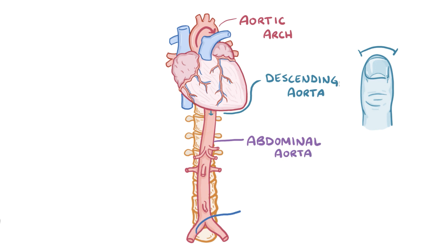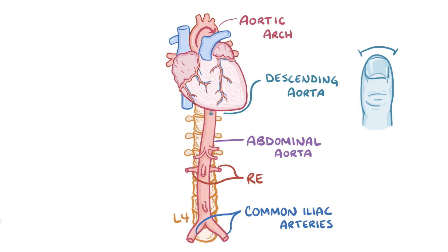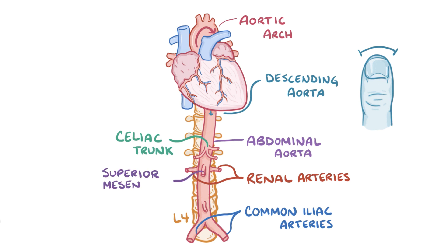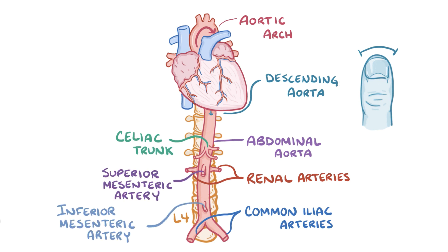The abdominal aorta then forks into the common iliac arteries near the 4th lumbar vertebra, or L4. Along the way, it gives rise to a number of paired arteries like the renal arteries, as well as three unpaired arteries — the celiac trunk, the superior mesenteric artery, and the inferior mesenteric artery.